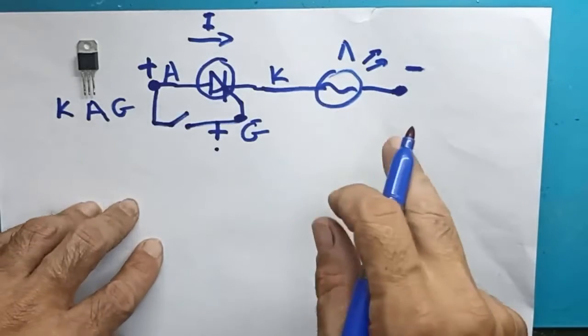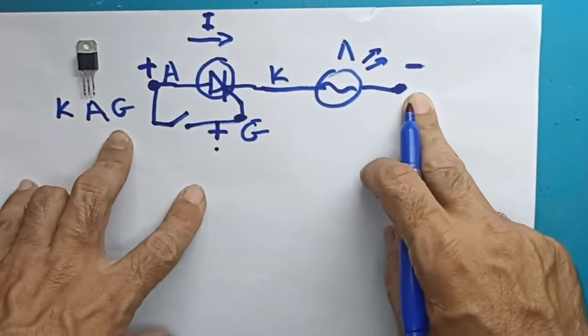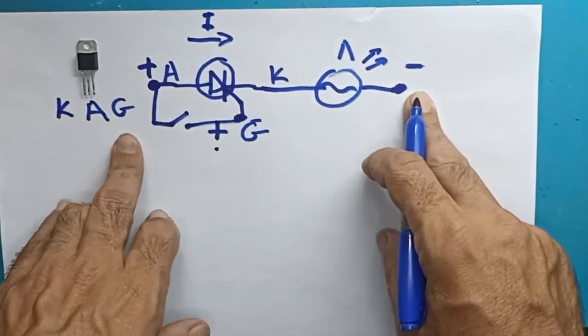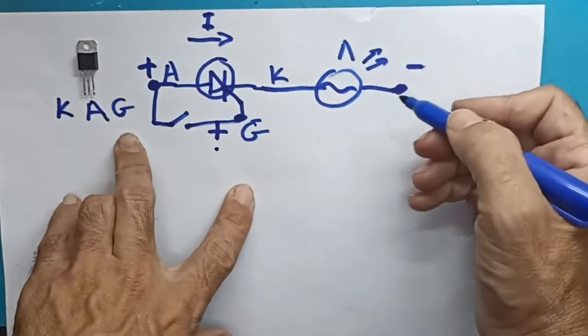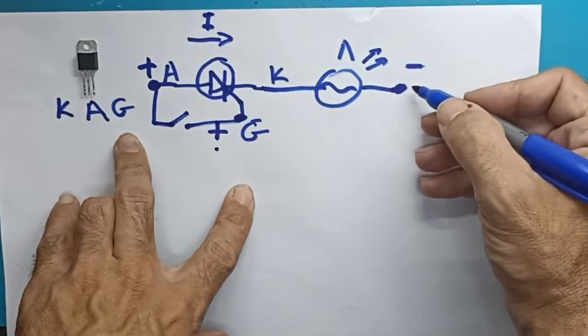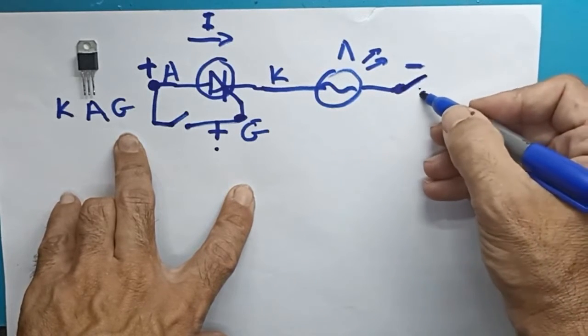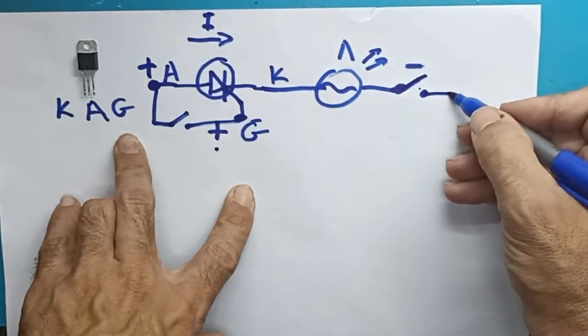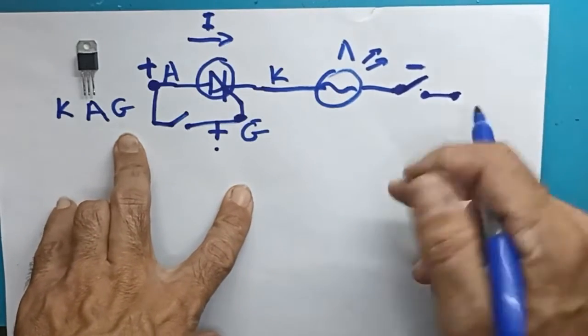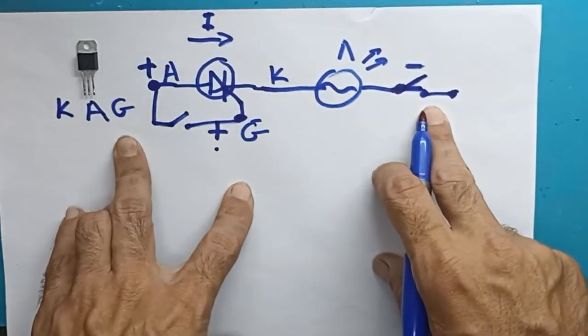And to turn off the bulb, either the anode becomes more negative than the cathode, so we mean a change in current, or to cut the current between anode and cathode. So I can put a switch here and cut the current. If I open this switch and cut the current, the bulb will stop lighting up.